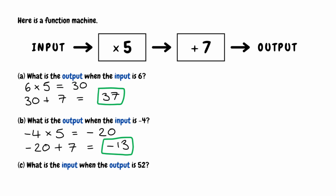For part C, we have to figure out the input when the output is 52. We're working backwards, so we do the opposite operations. Starting with 52, instead of adding 7, we subtract 7, so 52 take away 7 gives us 45. Then instead of multiplying by 5, we divide by 5, so 45 divided by 5 gives us 9. When the output is 52, the input is 9.